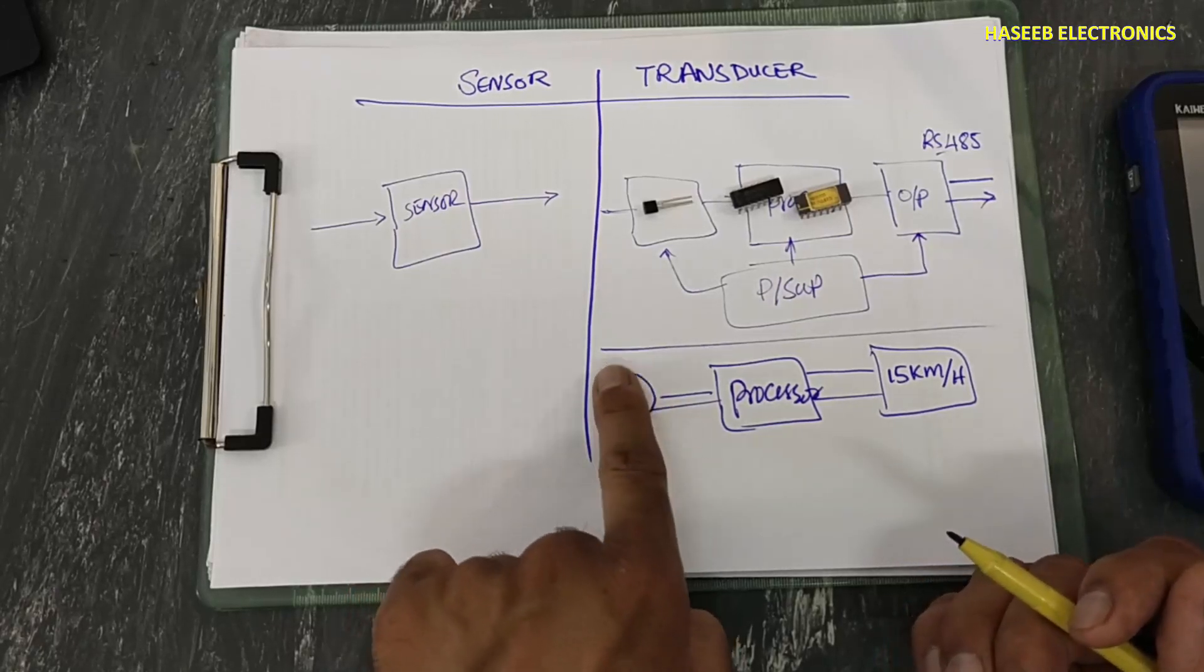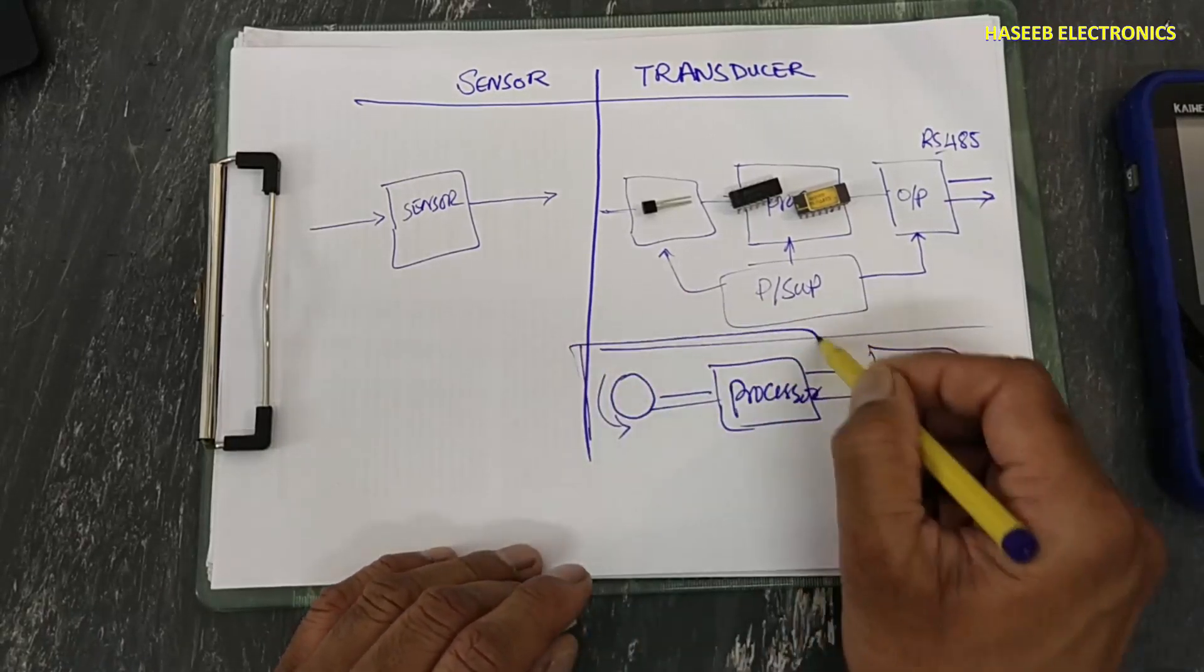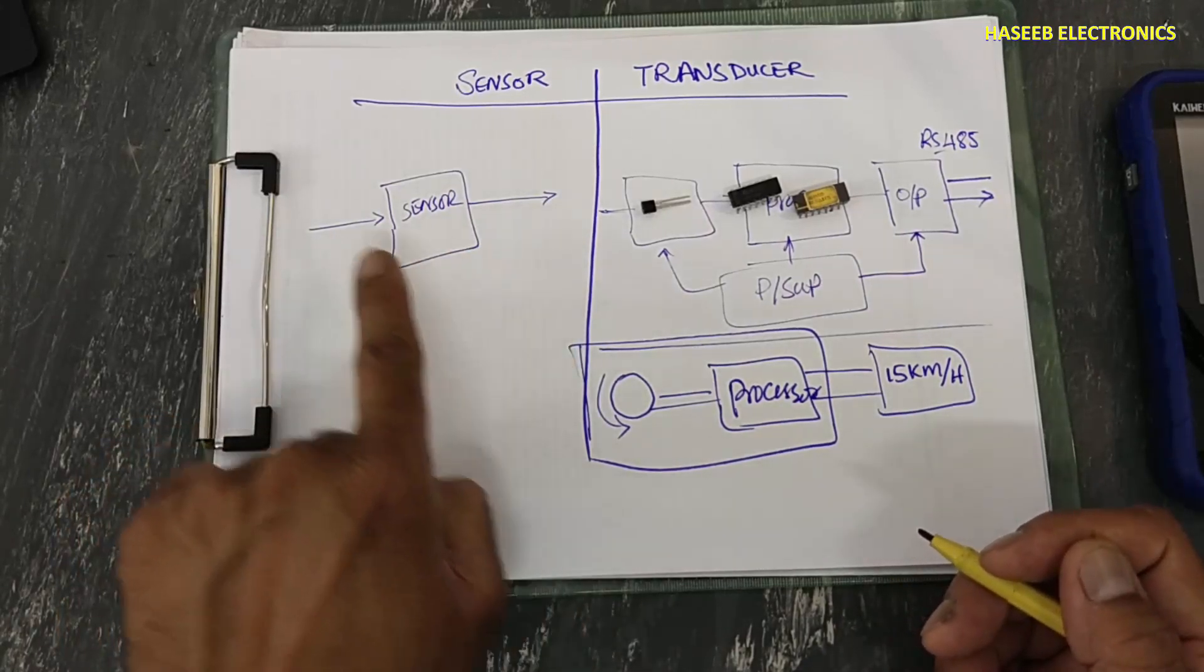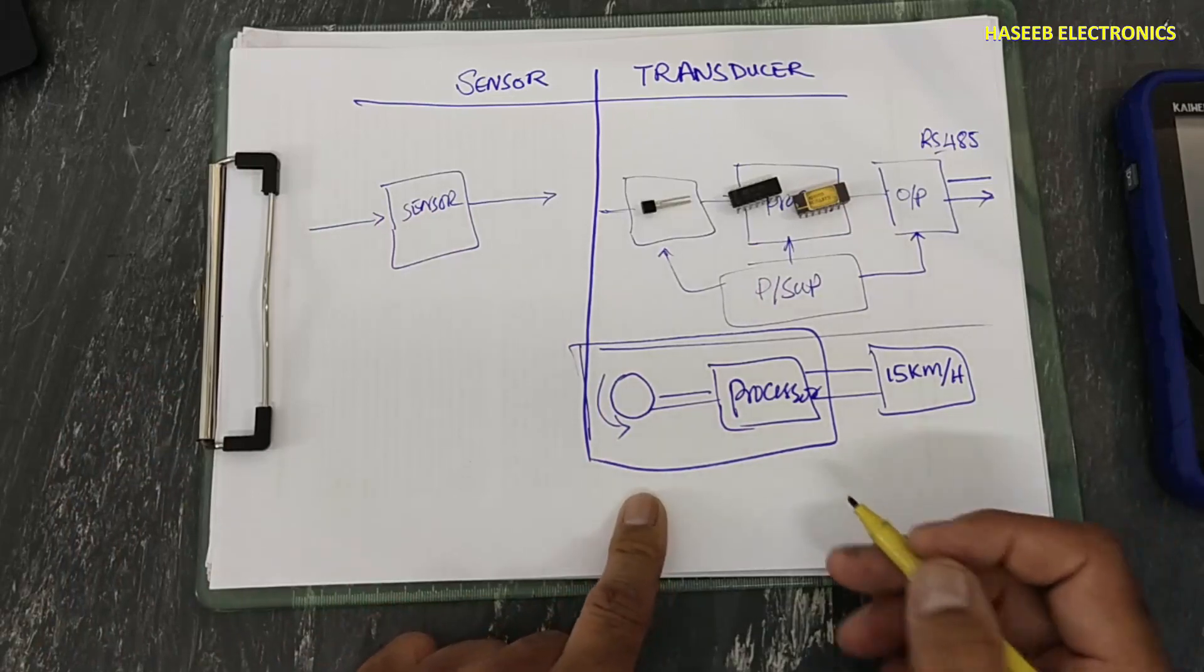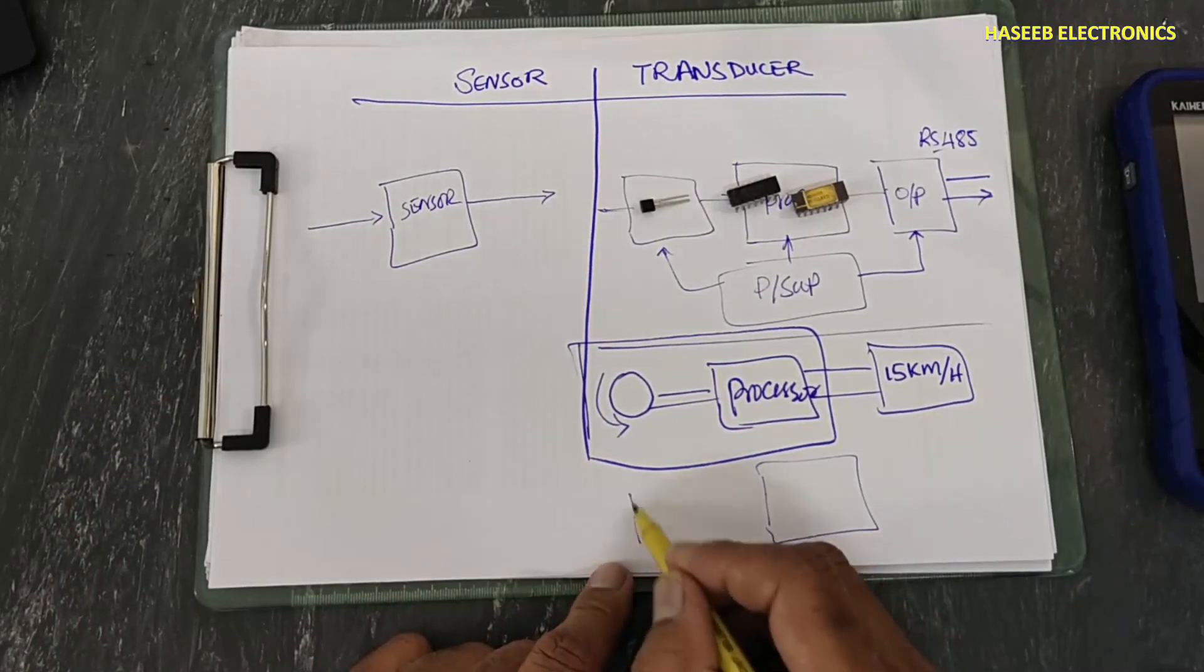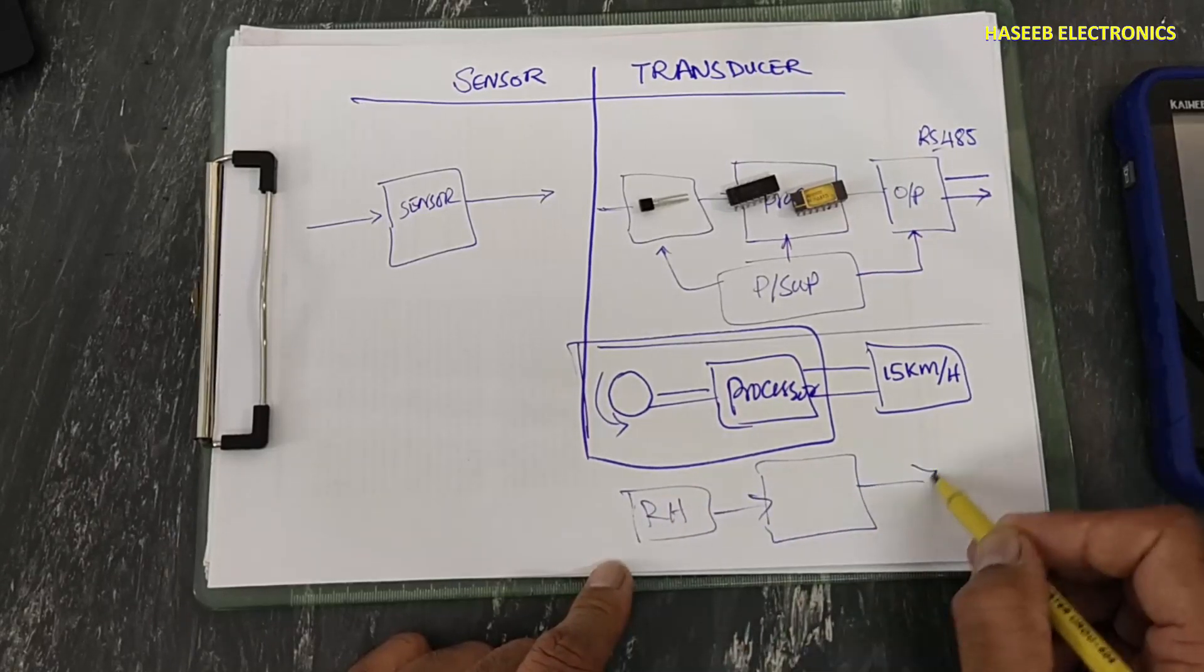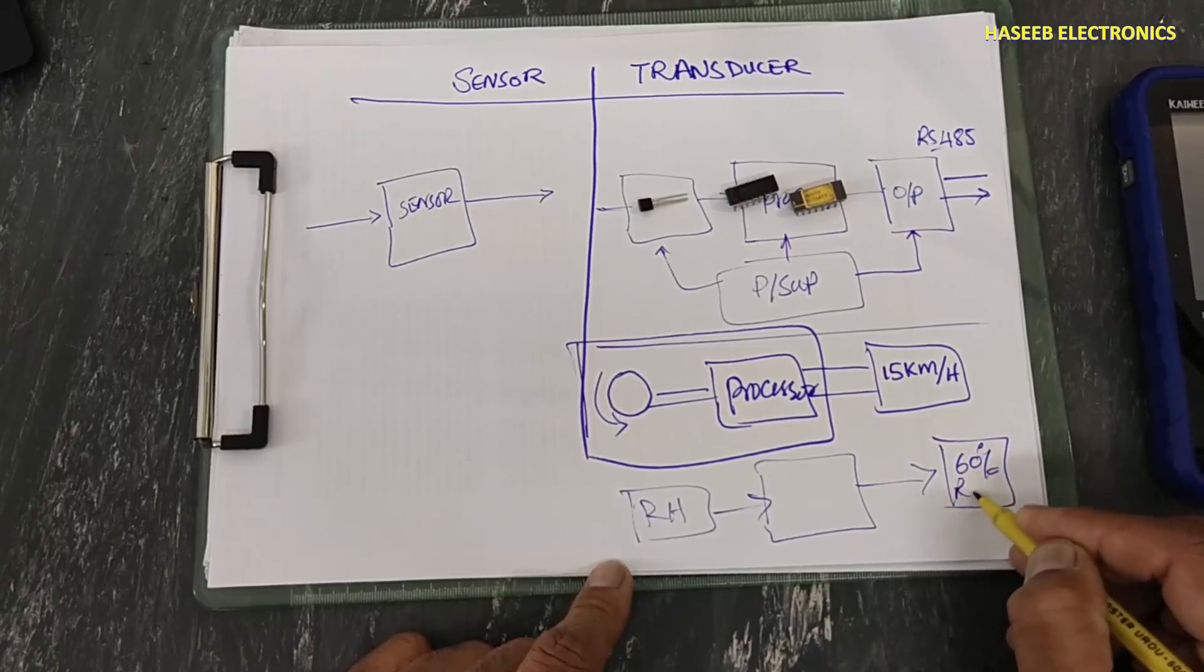When this signal is processed, it will become transducer. Relative humidity sensor - here was just only sensor, then we will provide to any processor, we will make conversion, then it will provide 60 percent humidity.